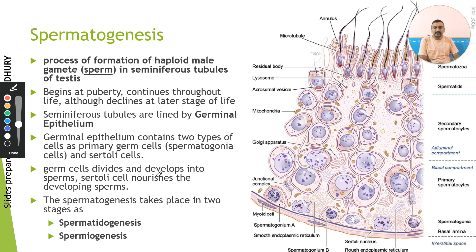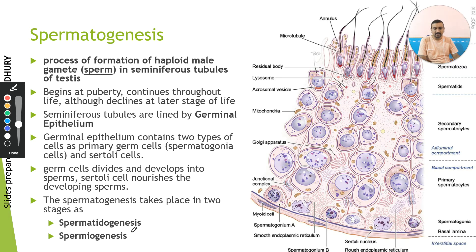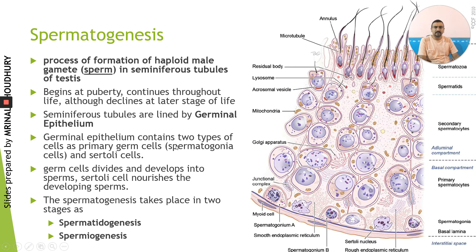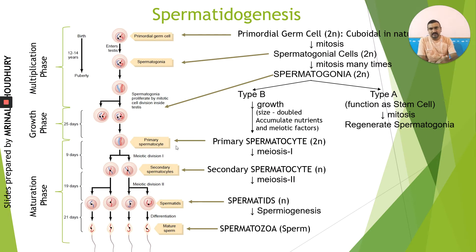The germ cells divide and develop into sperms. Spermatogenesis overall has two steps: one is called spermatidogenesis, during which a structure called spermatid is formed, and the other process is called spermiogenesis. Spermiogenesis is the process during which a spermatid undergoes differentiation to give rise to the spermatozoa or sperm. Let us understand these two processes in detail, starting with spermatidogenesis.